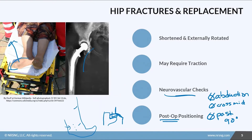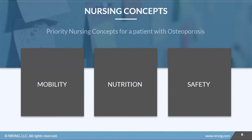We need to make sure they follow their doctor's orders regarding weight bearing and use assistive devices for safety. The top priority nursing concepts for a patient with osteoporosis are mobility, safety, and nutrition. We've got to prevent falls — they are at such high risk for fracture. We want to get their calcium and vitamin D up in their diet. Dairy products and green leafy vegetables are really good for that.